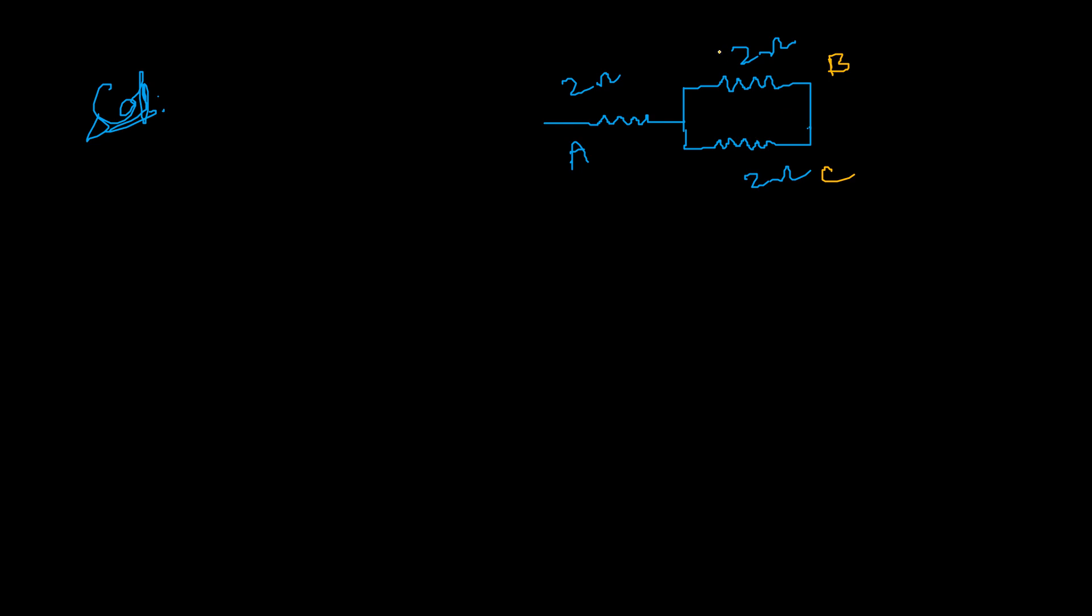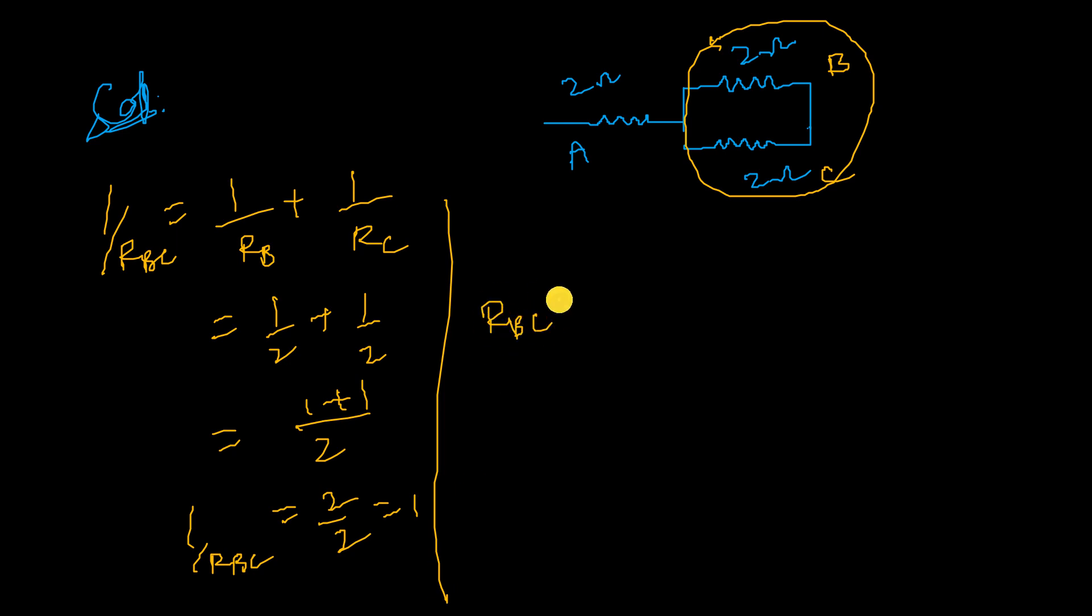Three resistors. Now you find out, so resistance of these two, that is 1 by RBC, I am taking 1 by RB plus 1 by RC. Then anything more, 1 by 2 plus 1 by 2. Then you will get 2, 1 plus 1, that is 2 by 2. Then you will get 1 by RBC equal to 1. So then we can get RBC equal to 1 ohm.